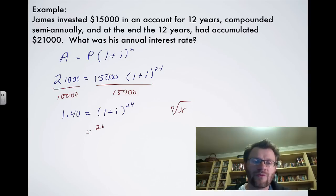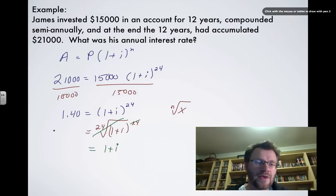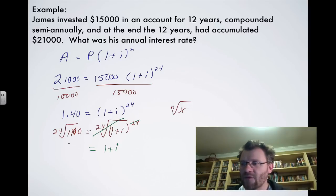So the 24th root of both sides, on the right-hand side, these 24s just end up canceling each other out, the 24th root and the raised to the 24th power. So we get 1 plus I on the right-hand side. On the left-hand side, though, we get the 24th root of 1.40. And when you do that, you find that to be 1.014. So 1.014 multiplied by itself 24 times would give you 1.40.